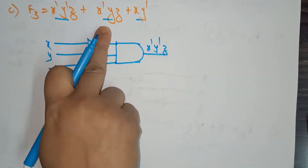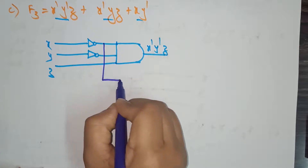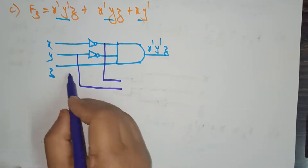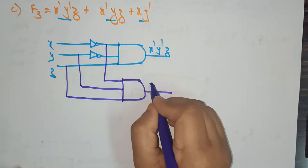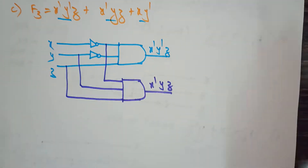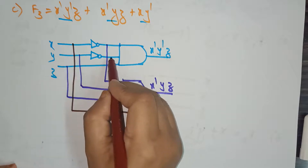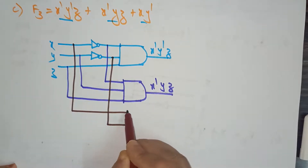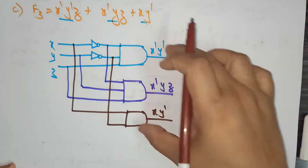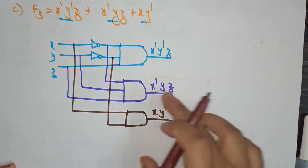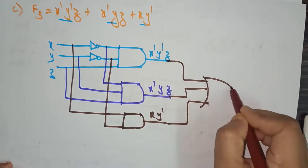The next expression is x'yz. So x' comes from the complement of x, y is a direct input, and z is a direct input — these go into another AND gate with output x'yz. And the final term is xy': x is a direct input and y' is a complement, going into a third AND gate with output xy'. All three expressions are then combined.